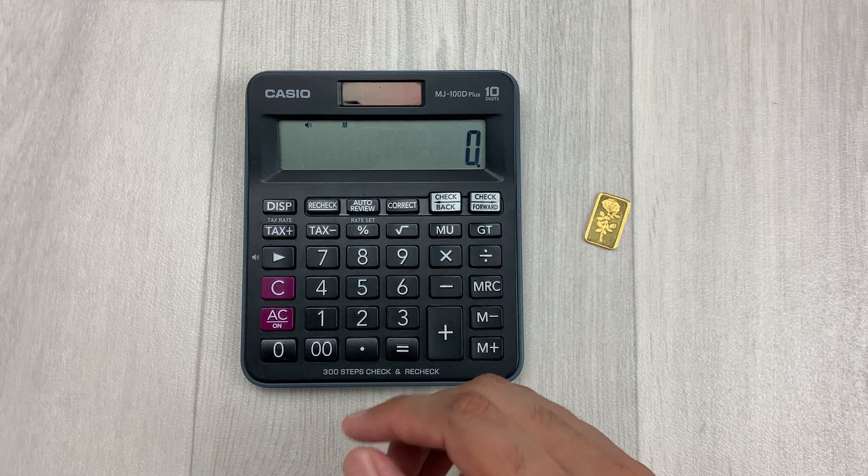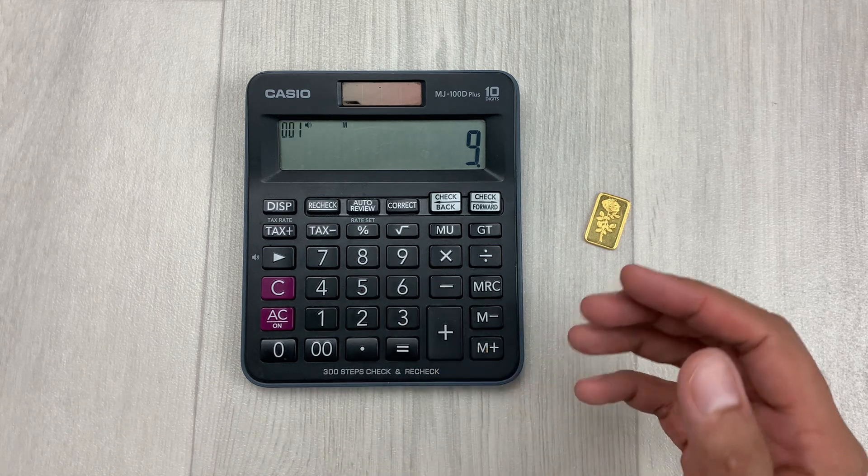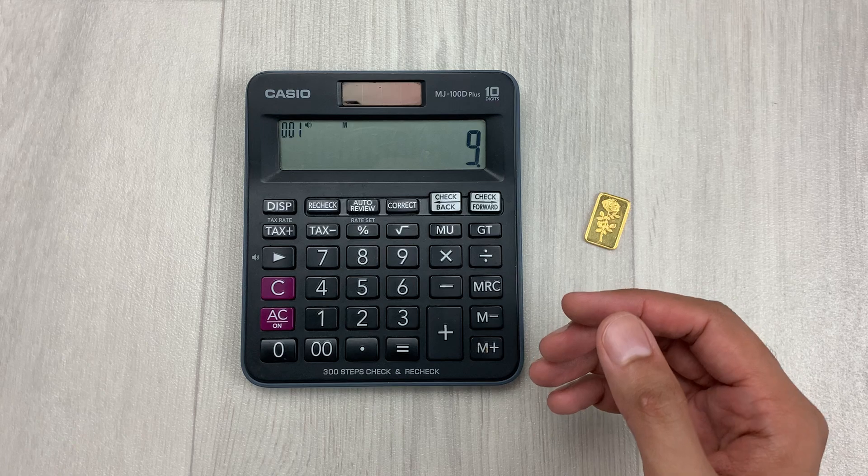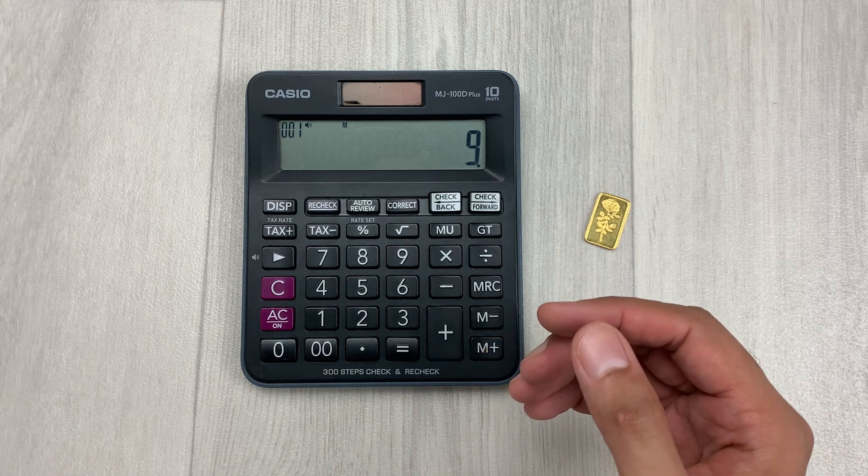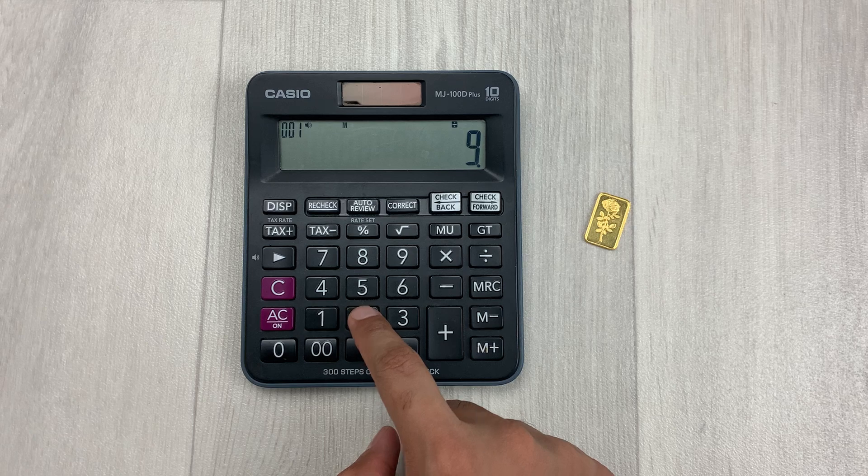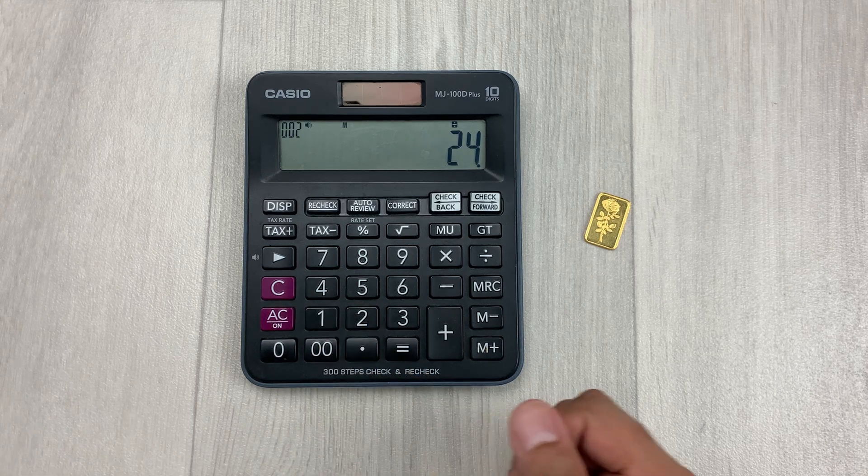So first of all, we will type 9 because it is 9 carats gold. And then we have to divide it by 24, so we will press this divide button and then we will type 24.